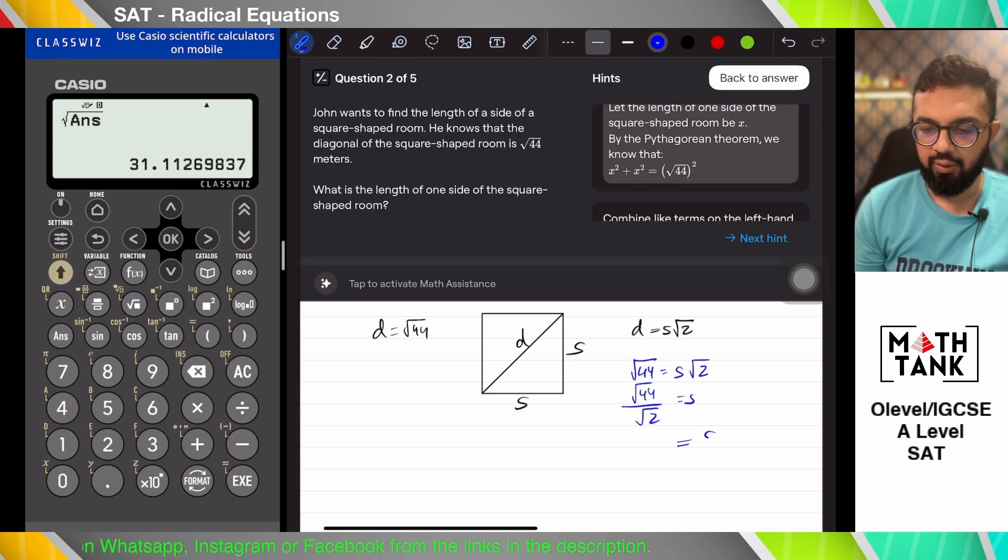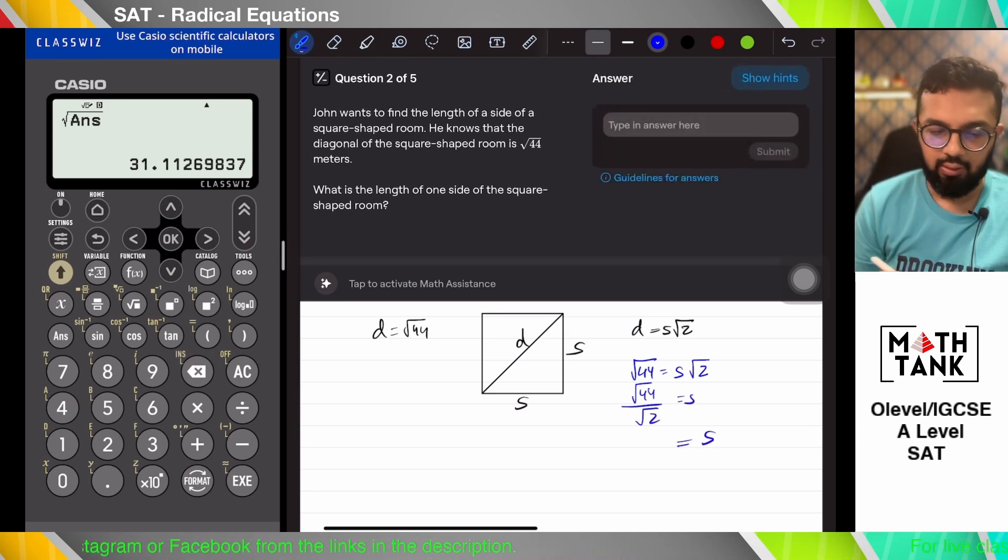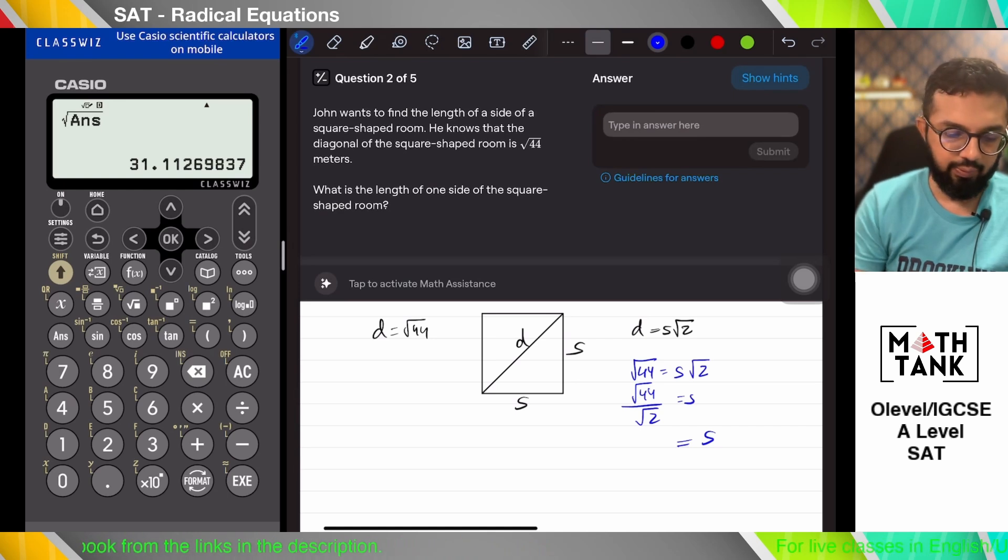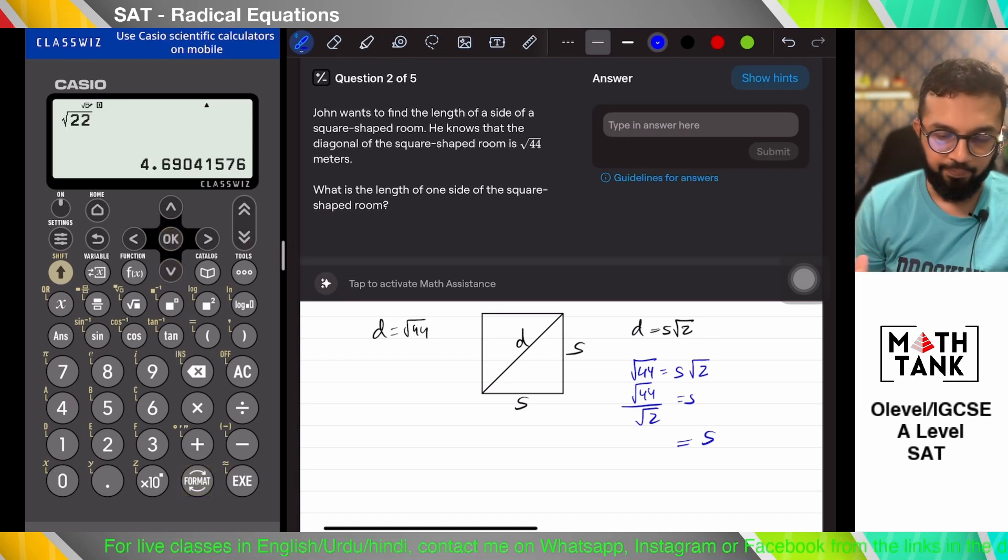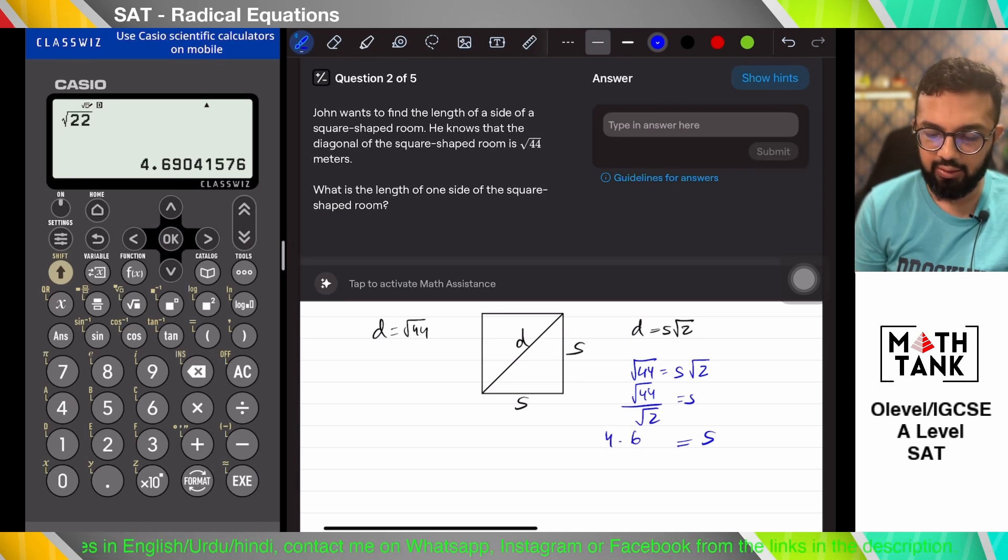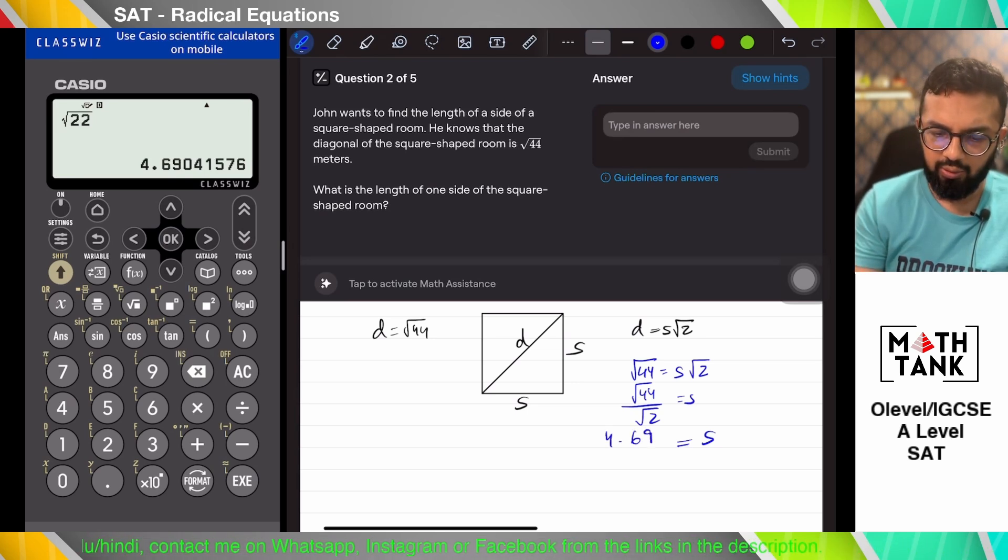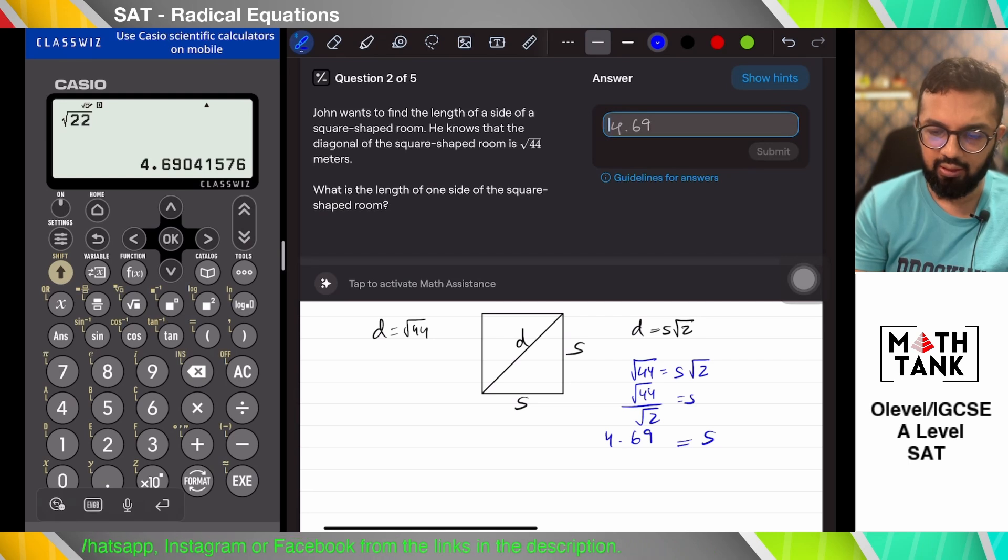And whenever you're giving these answers, you have to make sure that you give your answer to two decimal places. That's what the requirement might be on the grid space that you have. So I get 4.69. What is the length of one side of the square? I think it should be 4.69.